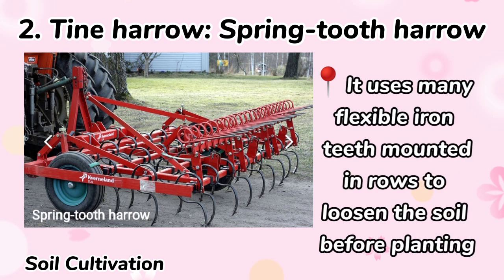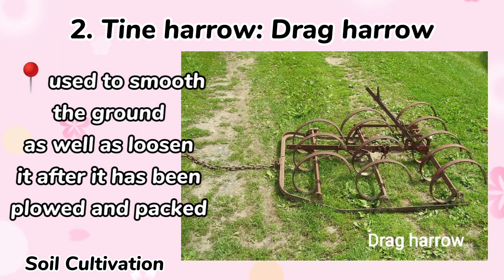The spring tooth harrows are sometimes called drag harrows, specifically a type of tine harrows which is largely outdated farm equipment. It uses many flexible iron teeth mounted in rows to loosen the soil before planting. Drag harrow is another outdated type of soil cultivation implement used to smooth the ground as well as loosen it after it has been plowed and packed.